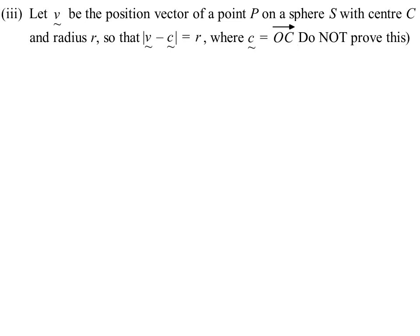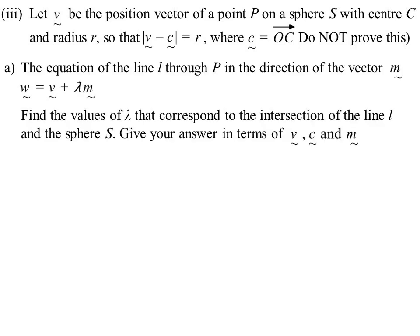This one's very interesting. Let v be the position vector of a point P on a sphere S with centre C, and radius r. The length of the vector, or the magnitude, |v - c| = r, where c is OC. The equation of the line L through P in the direction of the vector m, then w = v + λm, so that's the equation of our line. Draw a picture. Let's try and see what's going on here. So, we have a sphere. P is on the sphere. The tangent goes through the sphere. Somewhere else on the sphere, it's going to intersect, and that's our random point w. That's the equation we're trying to find. The equation of the vector will be a point that it goes through, we said it goes through v, plus λ times the direction vector, and they told me the direction vector was m. So, that's where this equation's coming from.